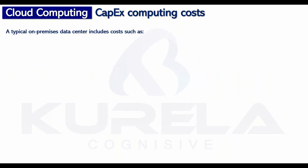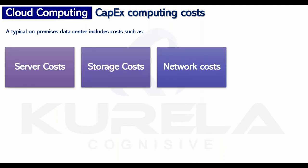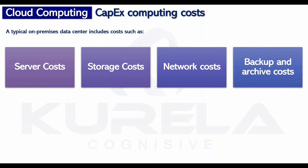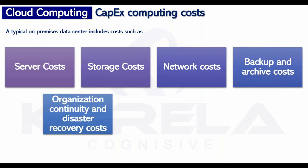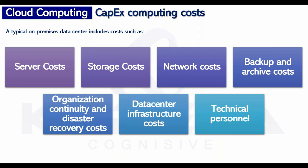In the CapEx model, a typical on-premises data center includes costs such as server costs, storage costs, networking, backup, disaster recovery, archival, business continuity, data center infrastructure costs, and technical personnel — the staff you hire. These are some of the areas where you invest money upfront, and there could be many others, but essentially you have to invest the money upfront.